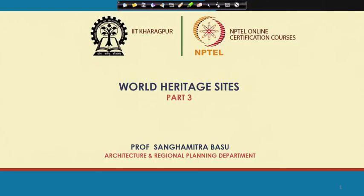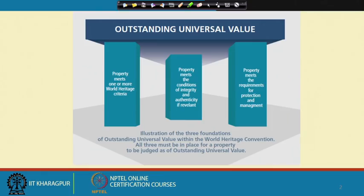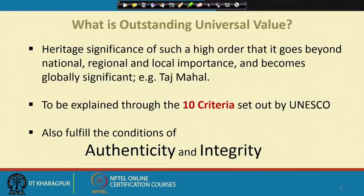We continue with our world heritage sites. We have been talking about the process of world heritage sites and said that there are ten criteria, and one has to see what those criteria are — these are the justification. We also talked about three major pillars of outstanding universal value for inscription, and we talked about authenticity and integrity. We have not talked much about authenticity and integrity yet — we will take that up later. But these ten criteria are the focus of our discussion today.